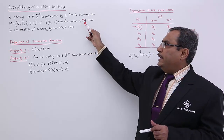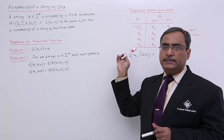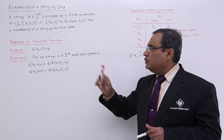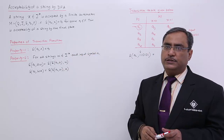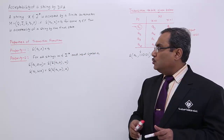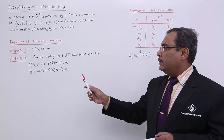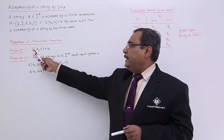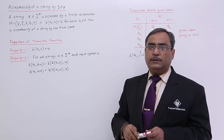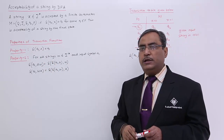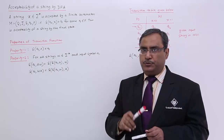If you are having any problem, we can discuss that with an example. We are having two properties for the transition functions. Property number one: delta(q, kappa) is equal to q. That means, for a state transition, I require a valid input — specifically the empty string kappa leaves the state unchanged.